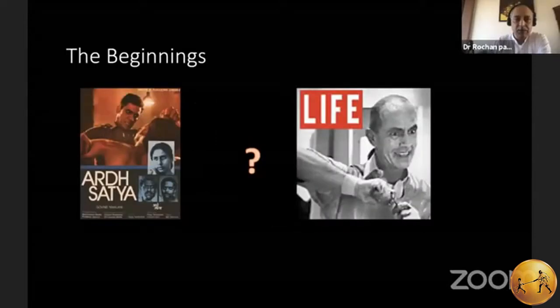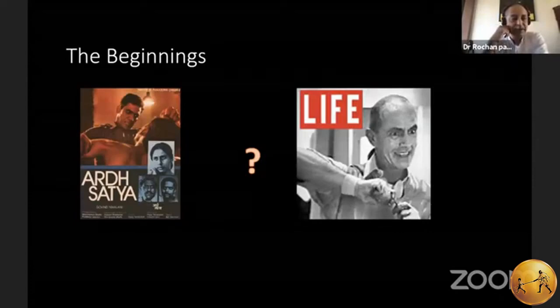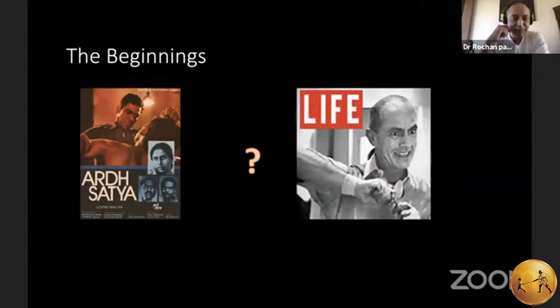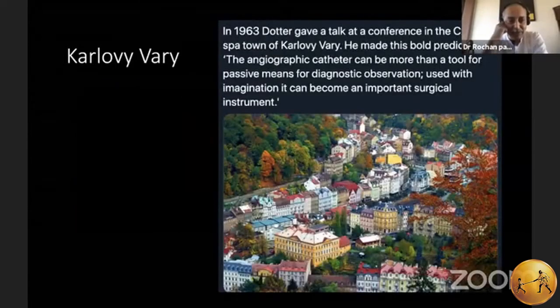Thank you. It's a privilege to be here and I'd like to thank the organizers. I'll start this with a strange kind of quiz. People might be aware that on the left is the famous movie Arsa Satya. And on the right, on the cover of Life magazine, is a gentleman called Dr. Charles Dotter, who's very famous. There is a link between these two, and the link is a place called Karlovi Vari.